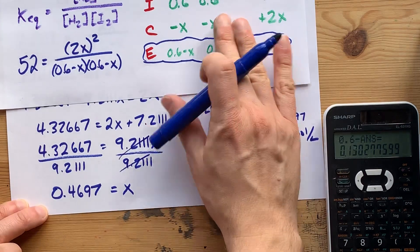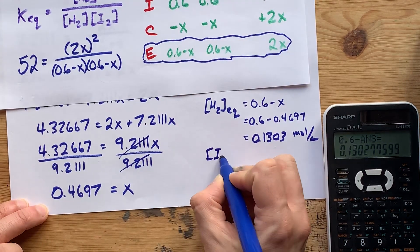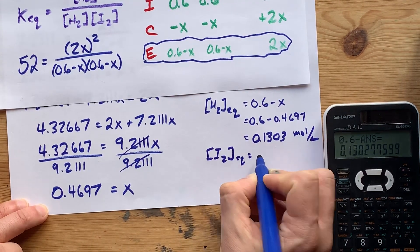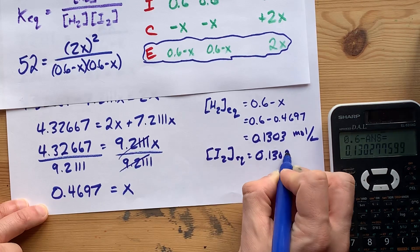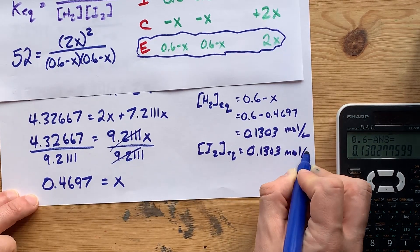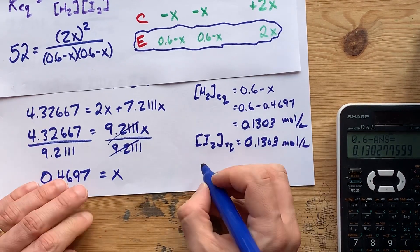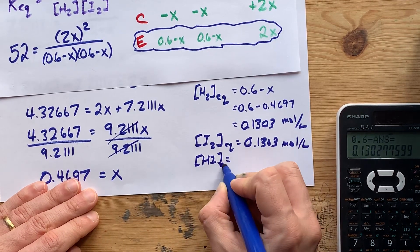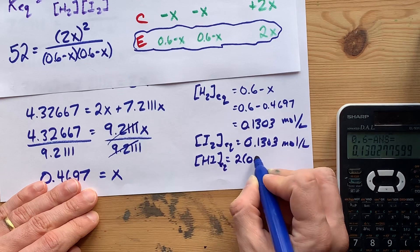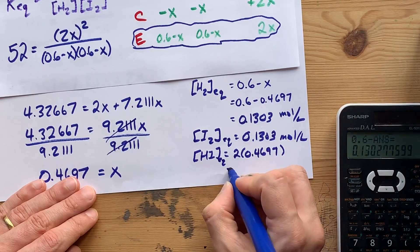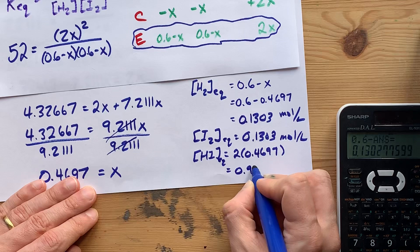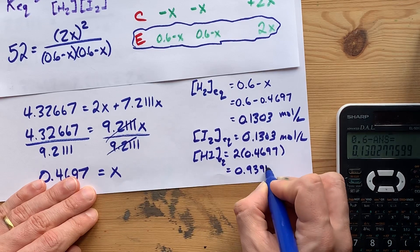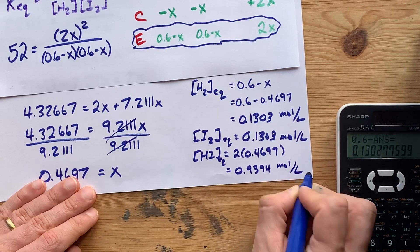My equilibrium concentration of I2 is exactly the same, so I can call it the same number without showing any more work. And my equilibrium concentration of HI is 2 times that X. 0.9394 moles per liter, apparently.